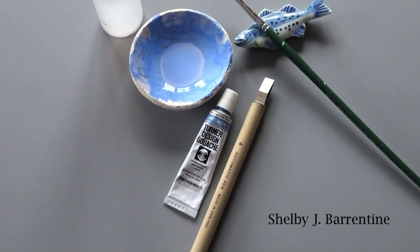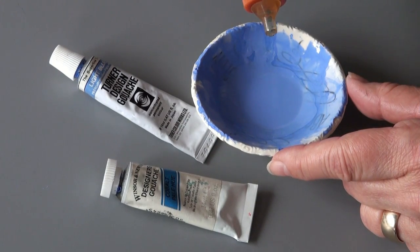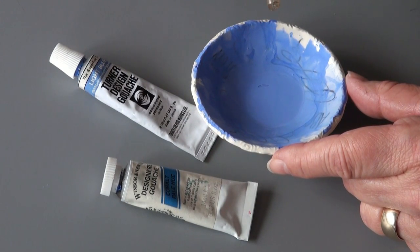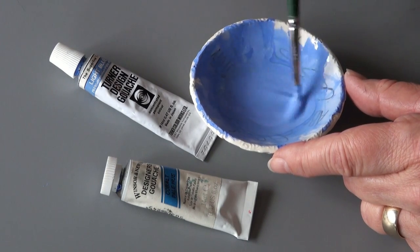Hi, my name is Shelby. For this project I'm going to letter the word January and I'm using pigment gouache, which is a lot like watercolor only it's opaque rather than transparent.